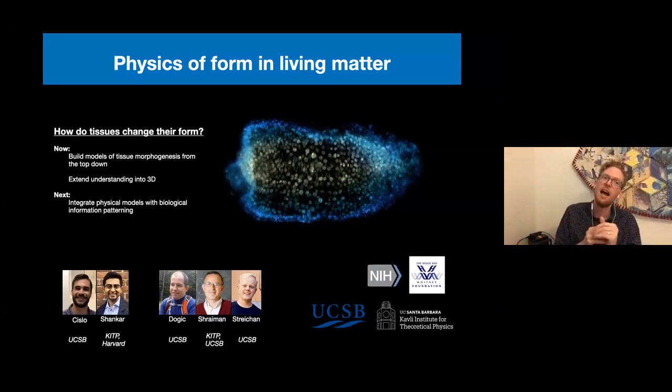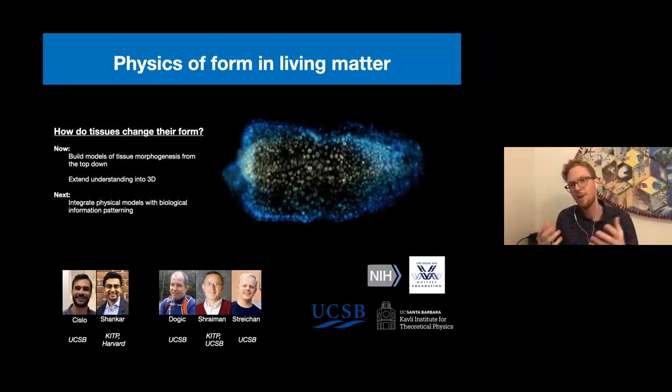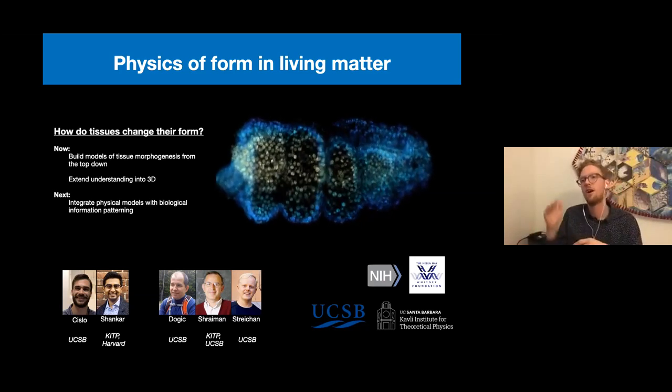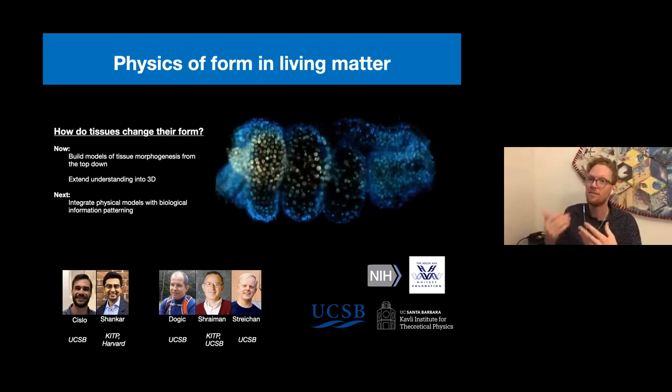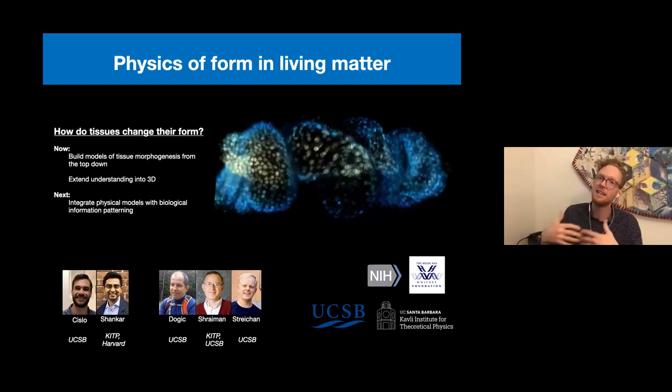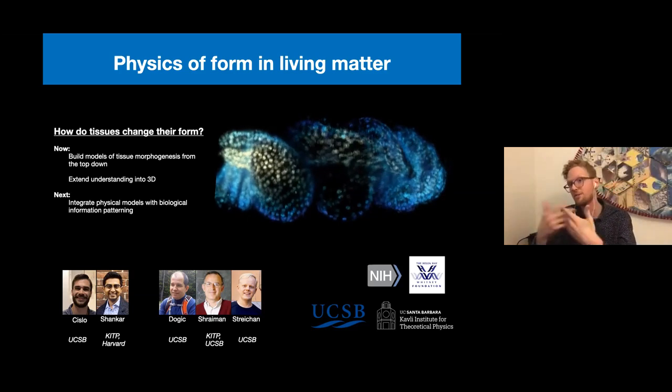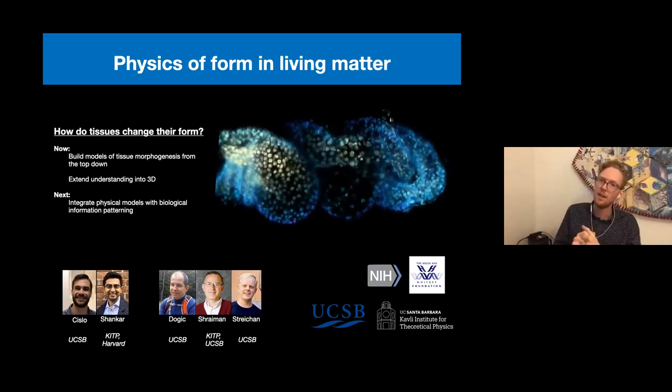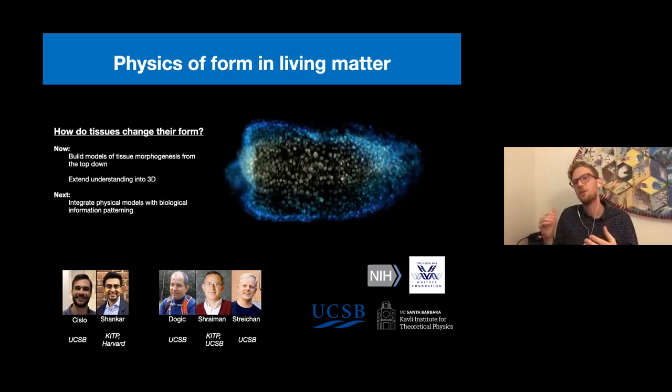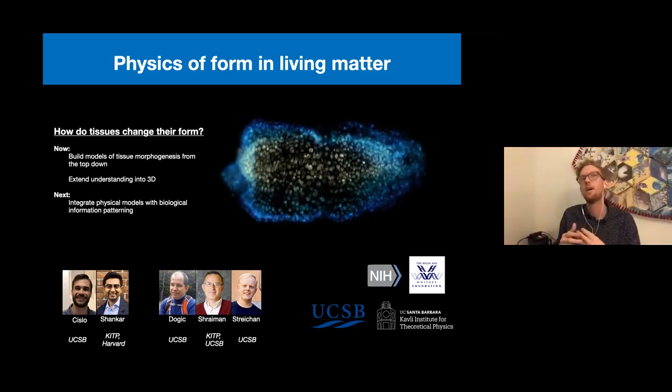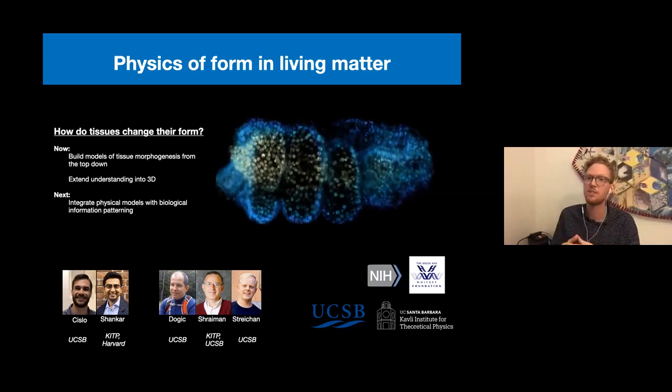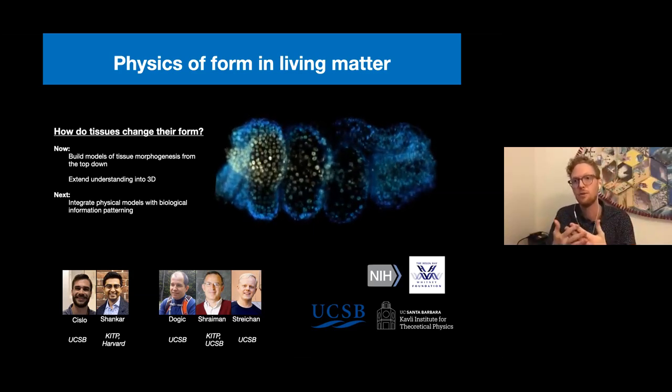So zooming back out, we've asked this question, how do tissues change their form? And what I hope I've shown you is that the community can now build models of tissue morphogenesis from the top-down using insights from physics. And what we're working on now at the KITP and at UCSB is extending this understanding to three dimensions, to three-dimensional shape changes. I think one big problem, one challenge for the community looking forward into the future is to integrate these top-down physical models with the bottom-up biological information patterning descriptions and understand how these two approaches weave together.